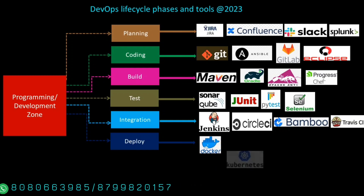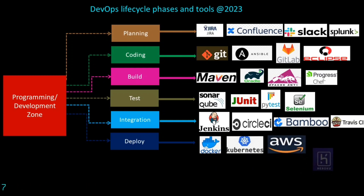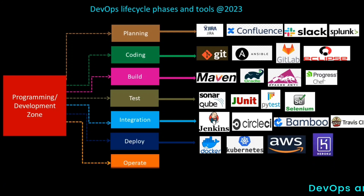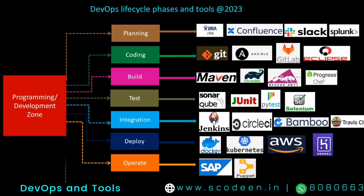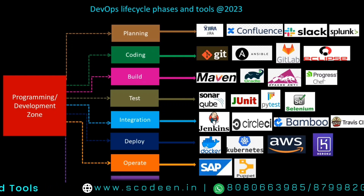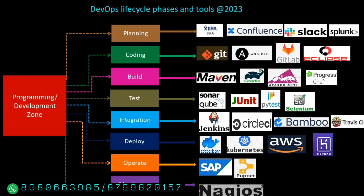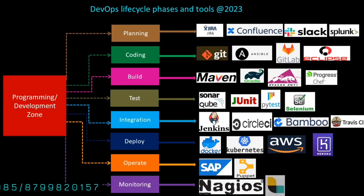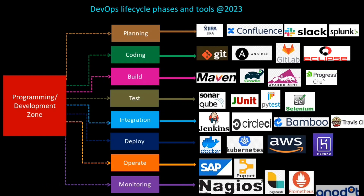During the deployment phase, we can use Docker, Kubernetes, AWS, and Heroku. To operate the code, we can use SAP server and Puppet. For monitoring purposes — to design the performance matrix — you can use Nagios, Logstash, Prometheus, and Grafana.